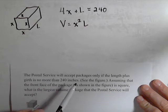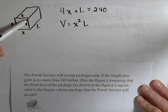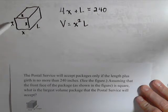The postal service will accept packages only if the length plus the girth is no more than 240 inches. The girth is the distance around the end plus the length. Assuming the front face of the package is square, what is the largest volume they'll accept?